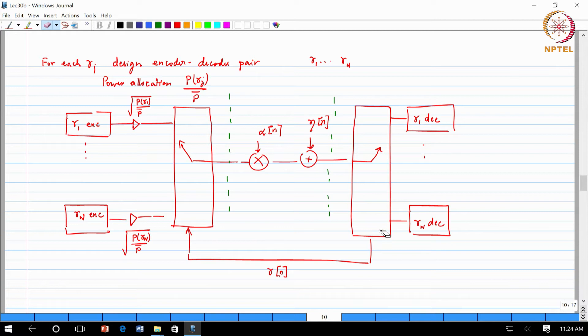At the receiver you couple it with the corresponding demodulation and decoding scheme. What is fed back? The instantaneous SNR is fed back. If it is gamma 1 you choose the upper encoder and then it will go through and at the receiver you will choose the corresponding decoder.